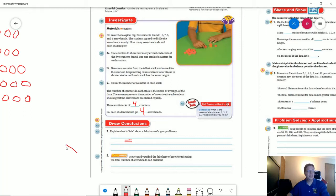Number two, how would we find the fair share of arrowheads using the total number of arrowheads in division? We can add 1 plus 5 plus 7 plus 3 plus 4, and we would end up getting the answer 20. And then we can do 20 divided by 5, the number of people, equals 4. And so that would be the way that we would do that.